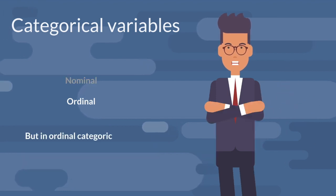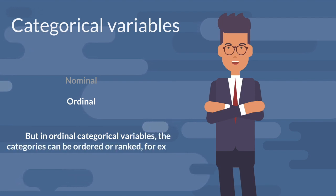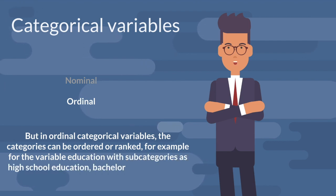But in ordinal categorical variables, the categories can be ordered or ranked. For example, for the variable education with subcategories as high school education, bachelor, master degrees, and PhD or higher, we can rank them.